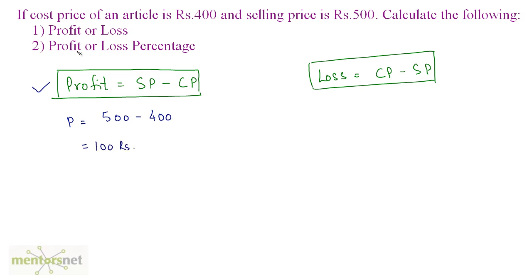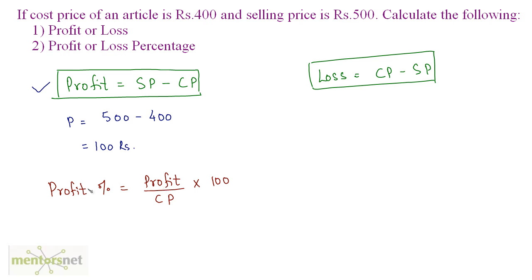Now we have to calculate the profit percentage. The formula for profit percentage is profit divided by cost price, times 100. Keep in mind that profit or loss is always calculated upon the cost price. So profit percent is equal to 100 rupees divided by 400 rupees, times 100, which gives us 25%.